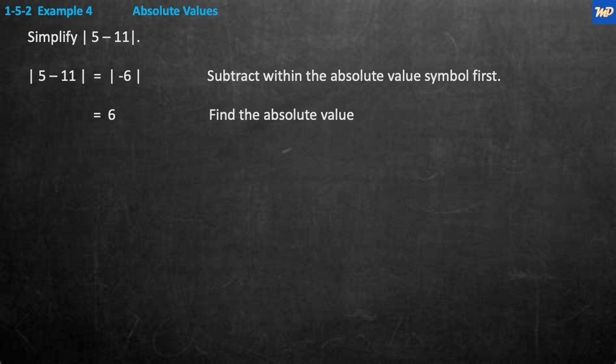Example 4, absolute values. Simplify the absolute value of 5 minus 11. First, resolve the inside: 5 minus 11 equals negative 6. Now we have the absolute value of negative 6. The absolute value of negative 6 is 6. We started with the expression, resolved it to negative 6, and then took the absolute value since nothing more can be done inside the symbols.